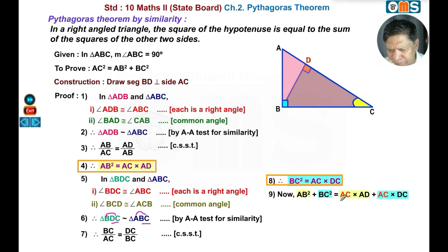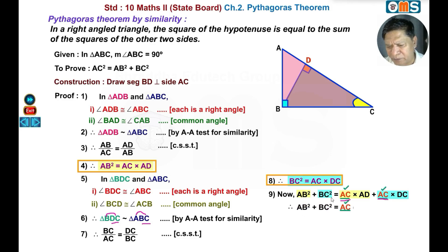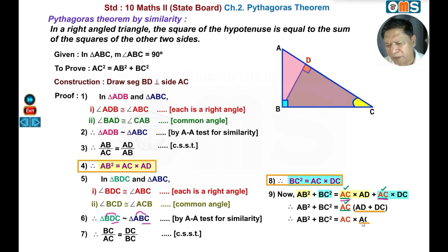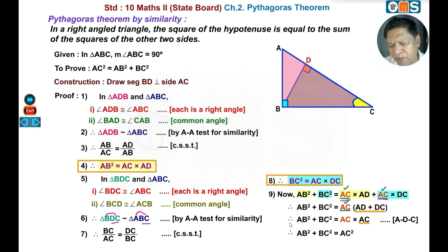Taking AC as common factor: AB square plus BC square is equal to AC into bracket AD plus DC. Now AD plus DC is equal to AC, since D lies between A and C. Therefore AB square plus BC square equals AC into AC, which equals AC square. Hence AC square is equal to AB square plus BC square. That is your answer.